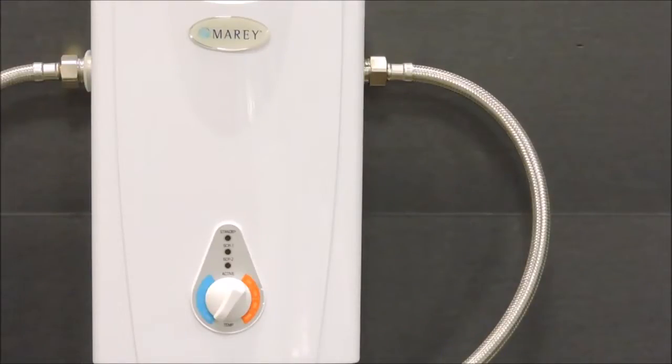Run water through the heater for a few minutes to purge all the air from the system. Shut it off at the faucet to pressurize the system. And at this point, check for and fix any leaks. If there are no leaks present, then let's move on to the next step.